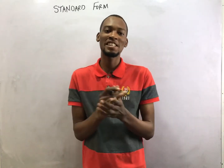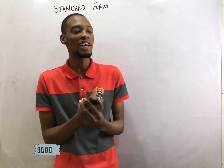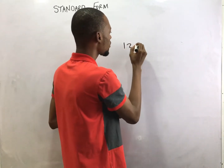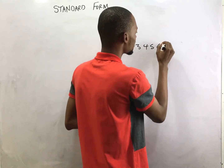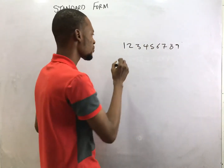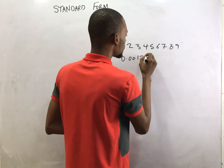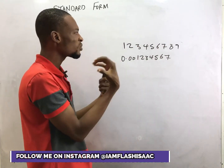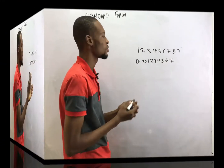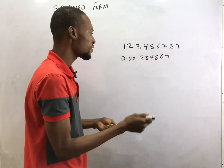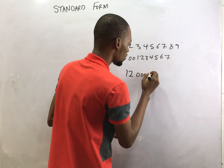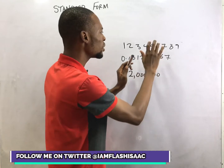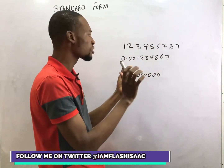Hello, welcome to mathematics class with Flash Isaac. Today I'll be taking you through standard form. Now, given numbers like 123456789 or 0.00123456789 — looking at these numbers, you realize it is difficult to read them. There are different values. If you had something like 12000000, you simply say 12 million, but when there are different numbers in between, trying to read them becomes difficult.